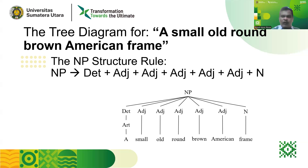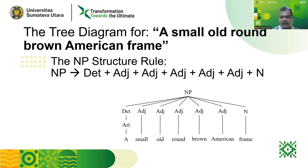You can see that we have now completed drawing the tree diagram for the long NP 'a small, all-round, brown American frame.' This analysis clearly shows you that it is always possible to have more than one adjective in one noun phrase. I hope you can understand this and apply this phrase structure rule for NP to other noun phrases. See you in the next video.